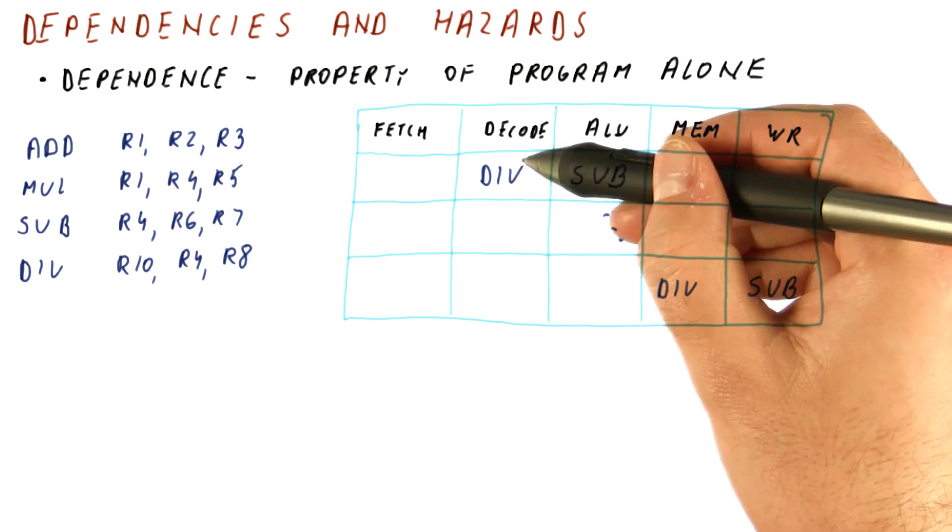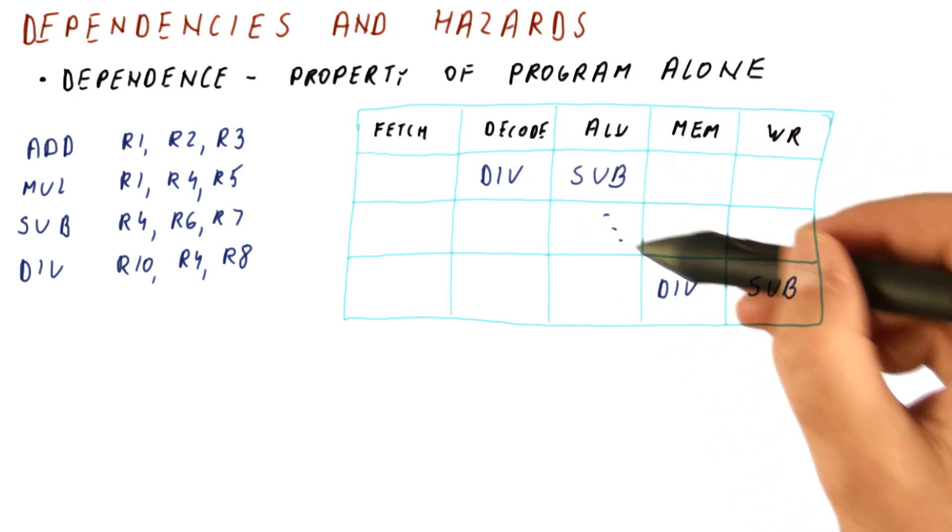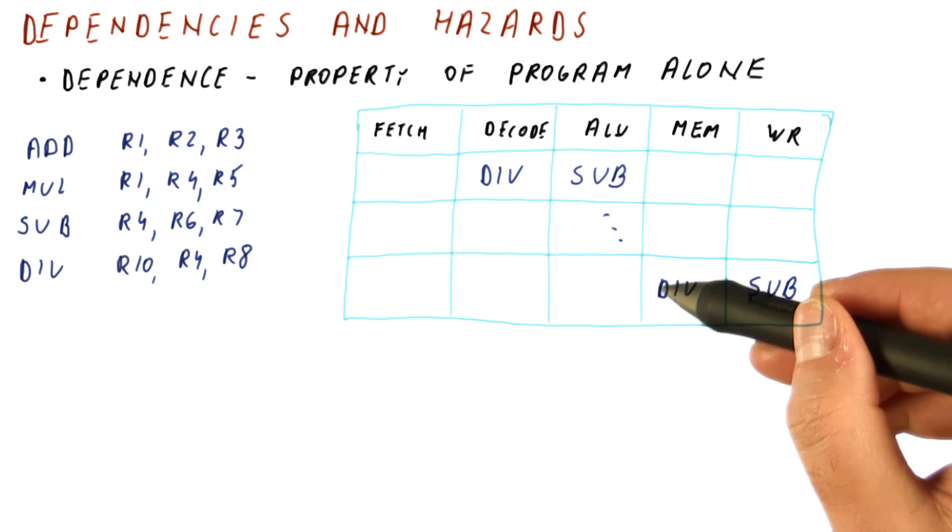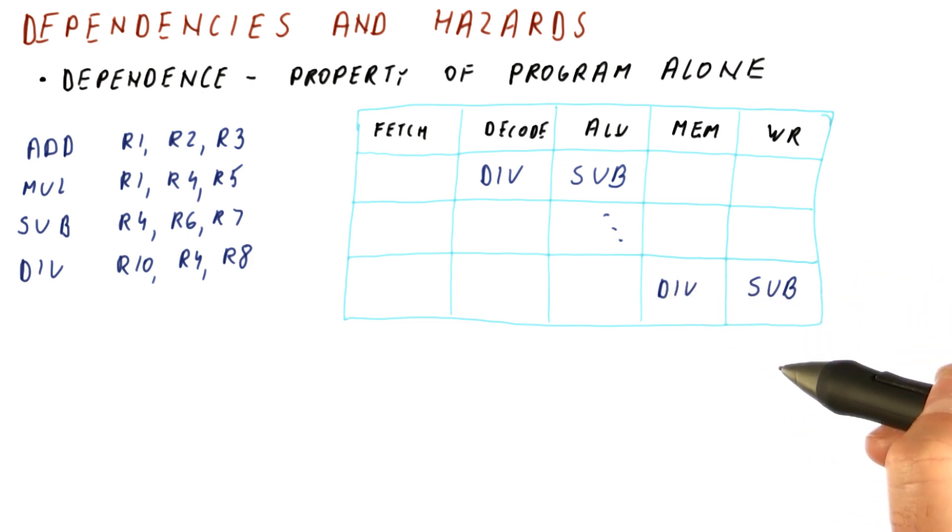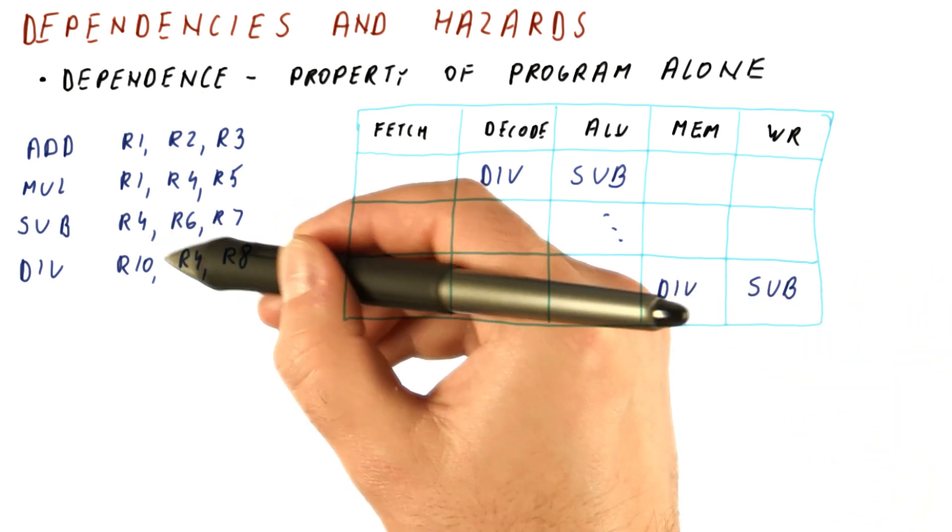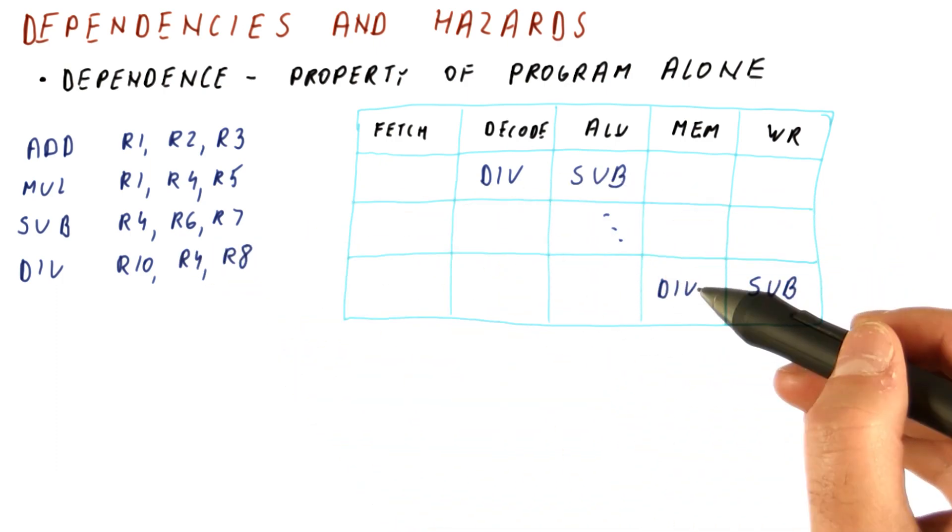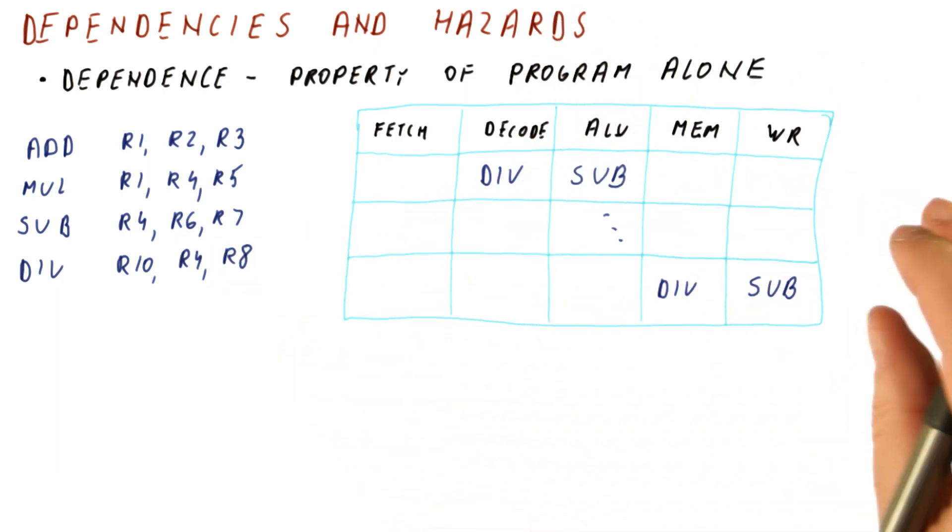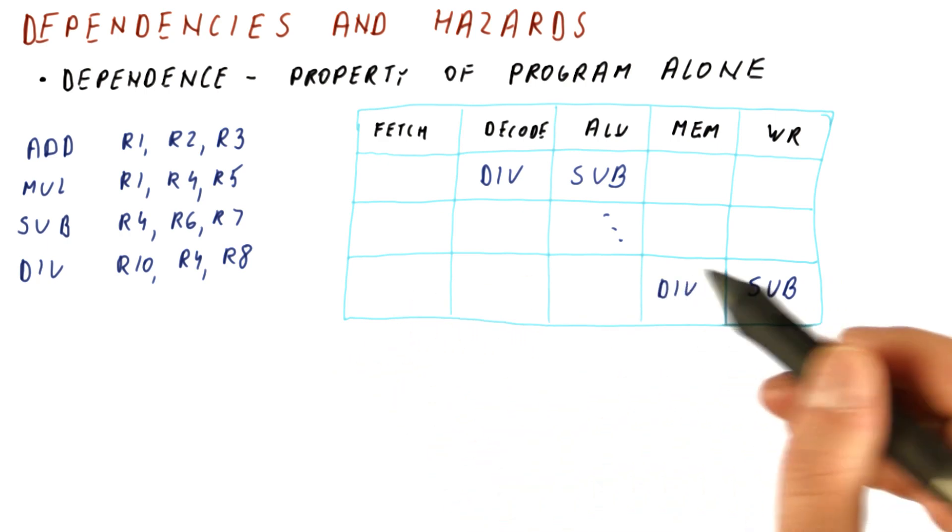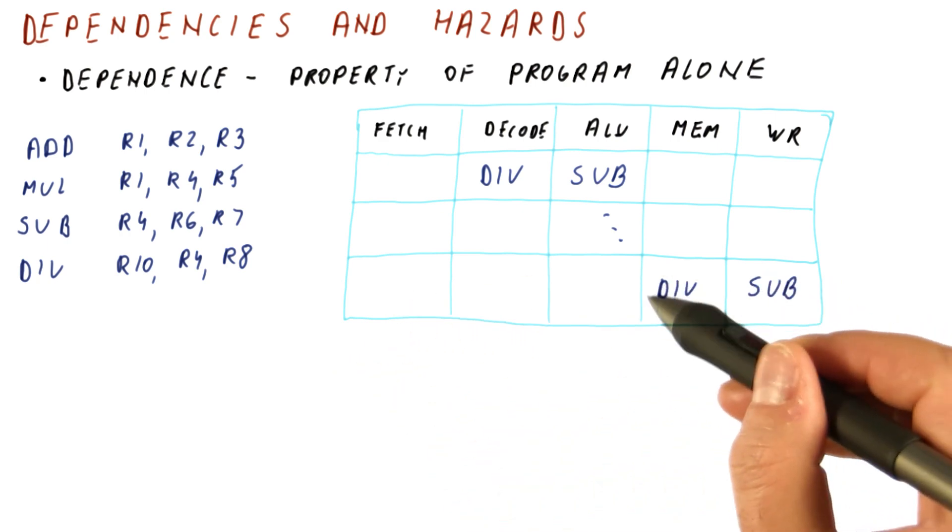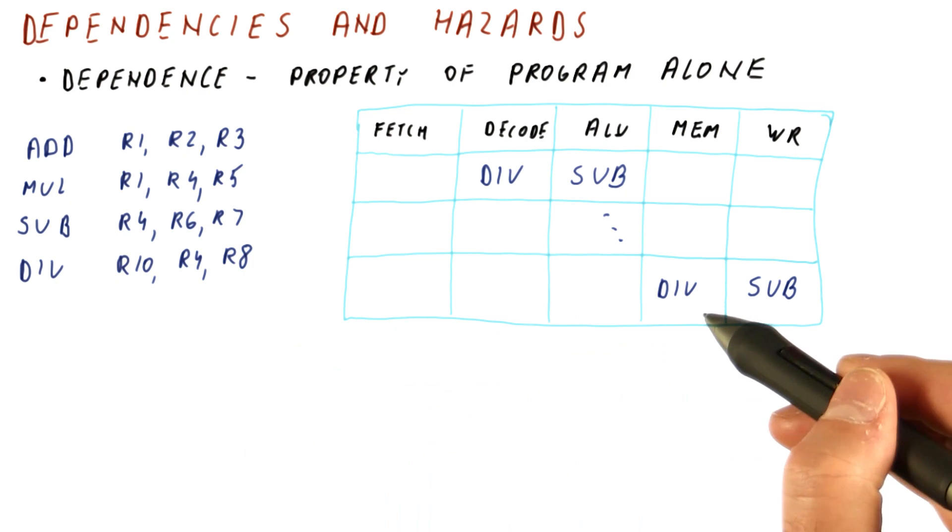So pretty much the divide read the wrong value for R4, computed with that wrong value, and then eventually deposits that wrong value into a register. So clearly, this true dependence here is a problem in our pipeline. If we just let things go and flow through the pipeline, we will have the wrong result deposited into R10 by the divide.